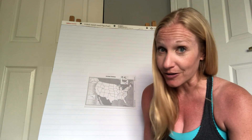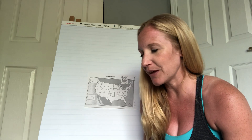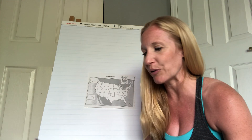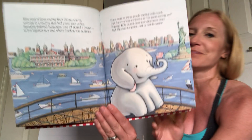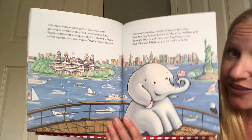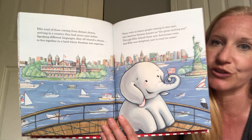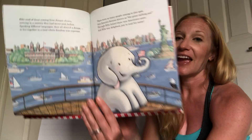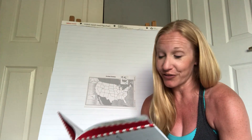Ellis read of those coming from distant shores, arriving in a country they had never seen before. Speaking different languages, they all shared a dream — to live together in a land where freedom was supreme. There were so many people coming to this spot that America became known as the great melting pot. Through Ellis Island these new Americans came, and Ellis was delighted just to read his name. Ellis Island is on the other side of our country, close to New York, where the Statue of Liberty is — and that will be part of our art project.